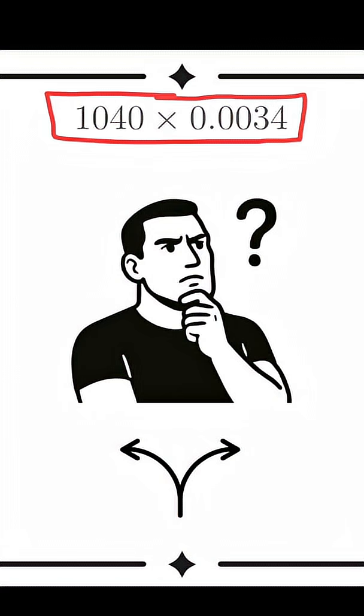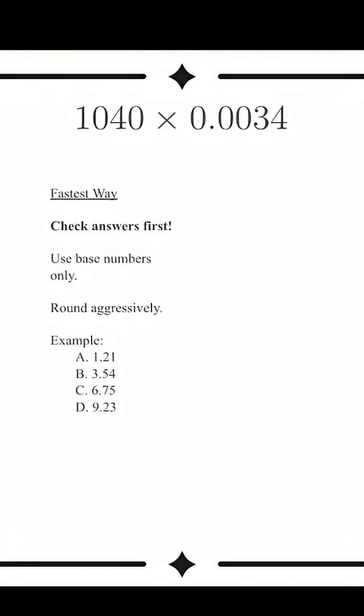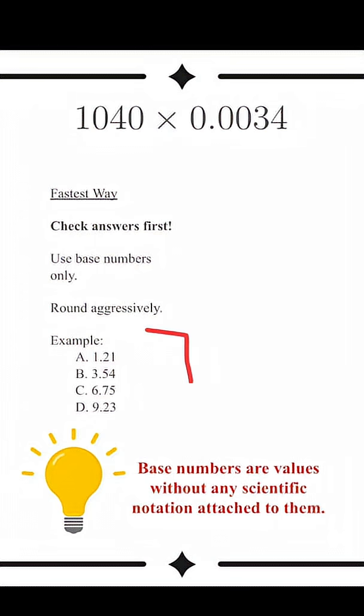Let's talk about the two right ways to round. The fastest way to round is to use base numbers only. Look at our answer choices. They all differ in their base numbers.